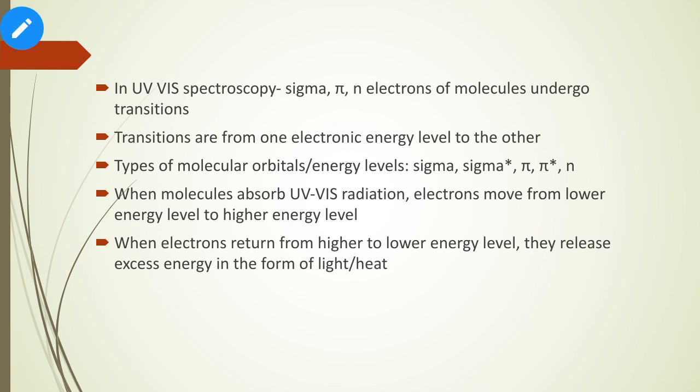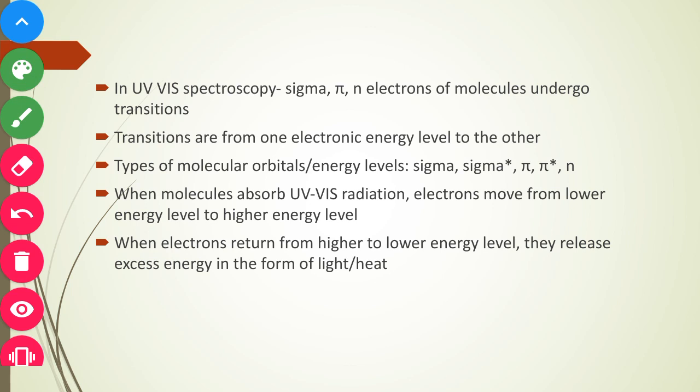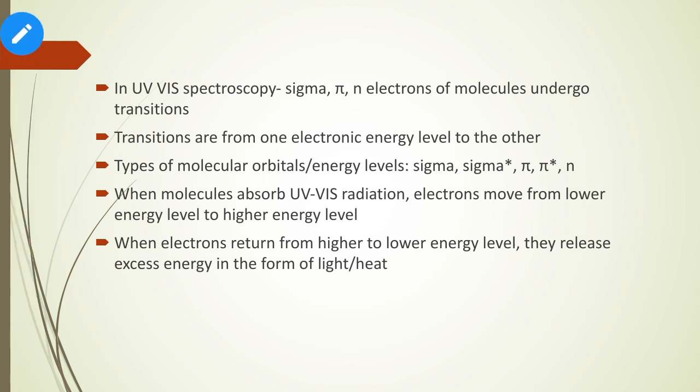Whenever the molecule absorbs UV-visible radiation, electrons move from a lower energetic energy level to a higher energetic energy level. The movement may also be in reverse — whenever the molecule returns from a higher energy level to a lower energy level, it releases energy in the form of light or heat. According to energy, the order of orbitals is: sigma, pi, n, then pi*, then sigma*.